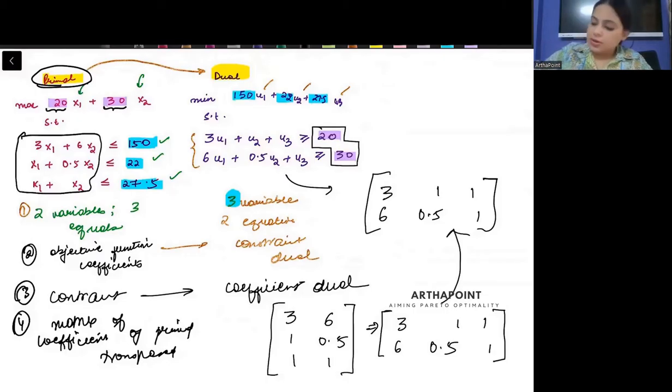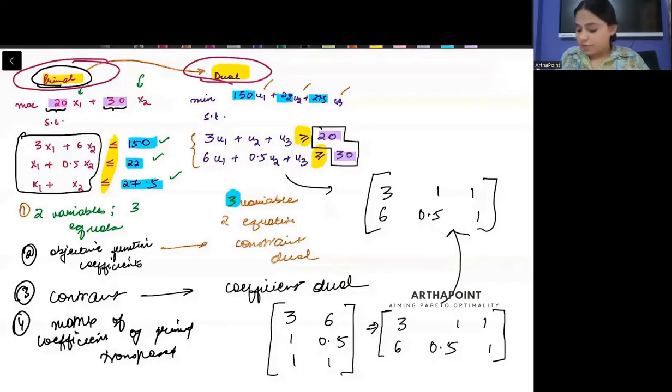Last point: here you will see less than signs, and these will be converted to greater than signs. This is how you can go from the primal to the dual. The fifth point is that the signs will reverse. If you do all of this, then you can go from a primal to a dual.